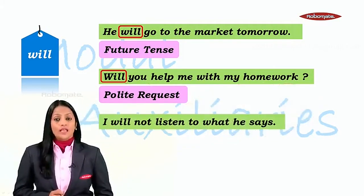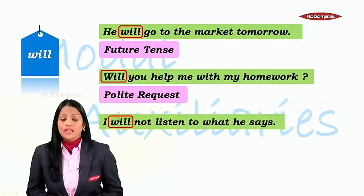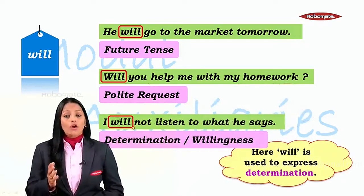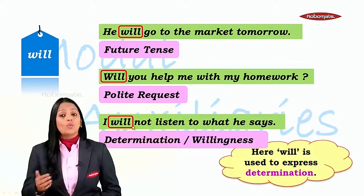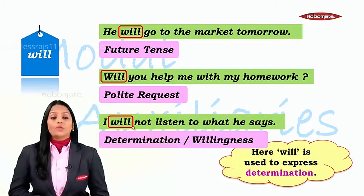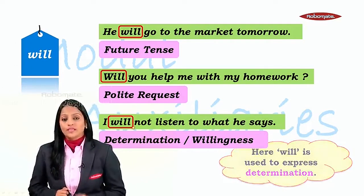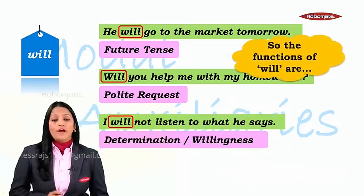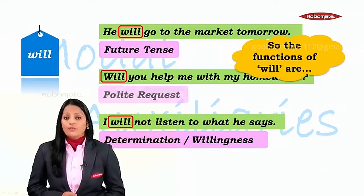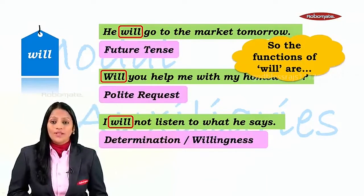Next: 'I will not listen to what he says.' This is determination, or sometimes willingness. When I say 'I will do this,' it is willingness. So 'will' is used to express determination or willingness. Basically, the three functions of 'will' are: future tense, polite request, and determination or willingness.